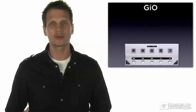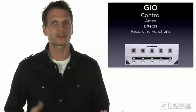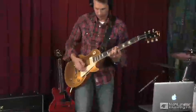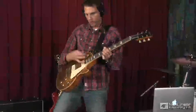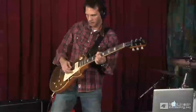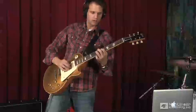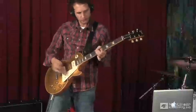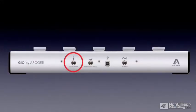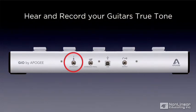GEO is a great way to control the amps, effects and recording functions in Logic, GarageBand and Main Stage. But GEO is also the way you will plug the guitar into your computer. GEO's quarter inch instrument input features Apogee's world class instrument preamp and converters. Hear and record your guitar's true tone without compromise, and GEO is optimized for all pickup configurations from the most basic single coil to sophisticated active electronic setups.